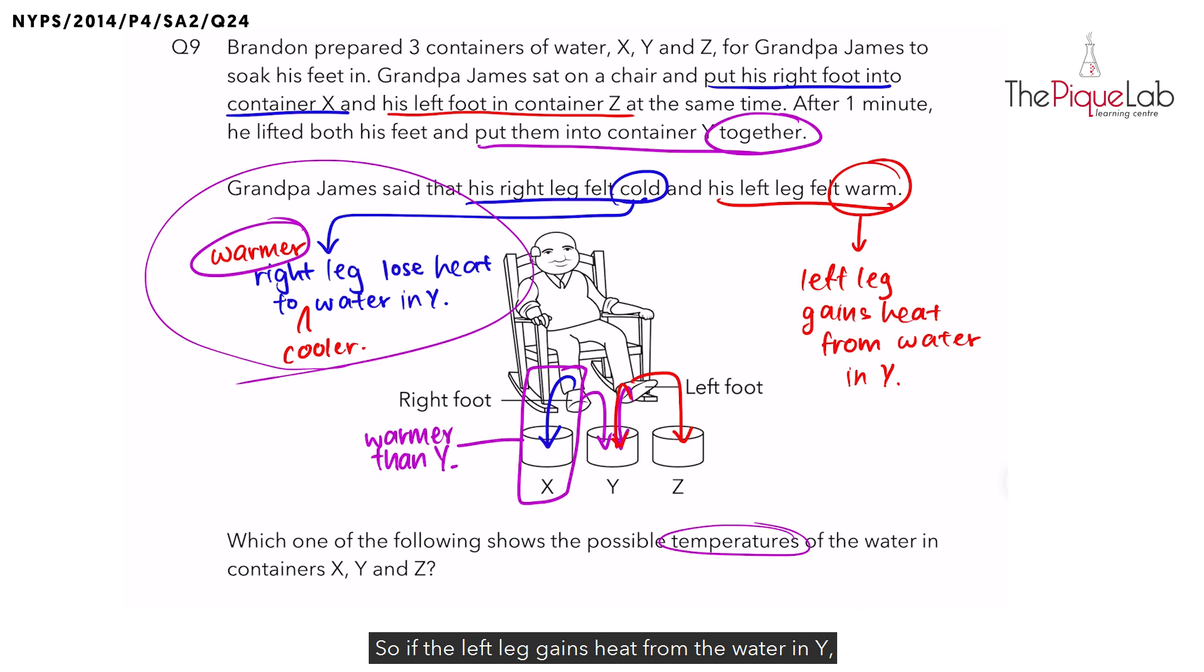So if the left leg gains heat from the water in Y, is the left leg warmer or cooler than the water in Y? Same thing, recall the property of heat: heat travels from a warmer to cooler region. If the left leg gains heat, it must gain heat from something that is warmer. That means the left leg should be cooler than the water in Y. So the water in Y should be warmer.